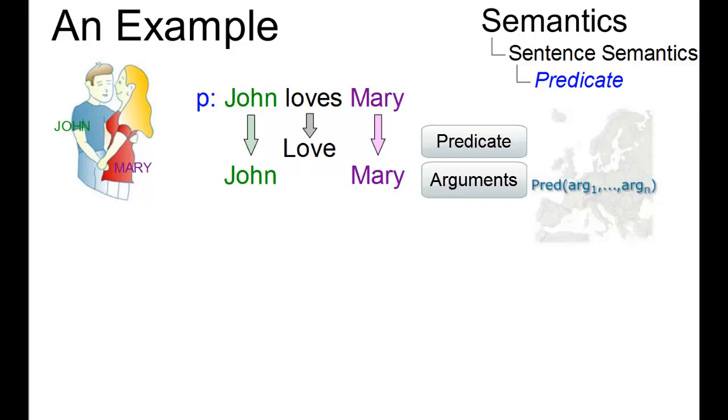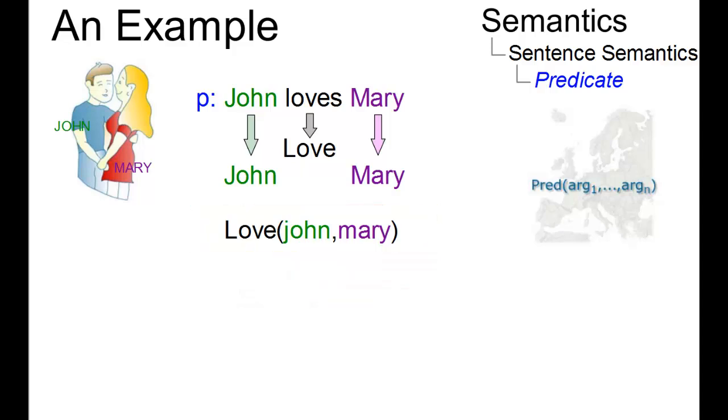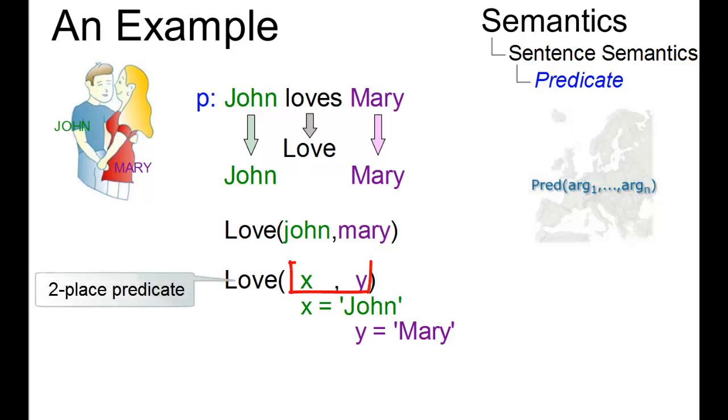This can be presented as a predication, where the arguments are constants. Since propositions are generally taken to be tenseless, predicate labels do not indicate tense either. So, love is a predicate with two arguments, a so-called two-place predicate, where the arguments are variables that are filled, in this case with John and Mary.